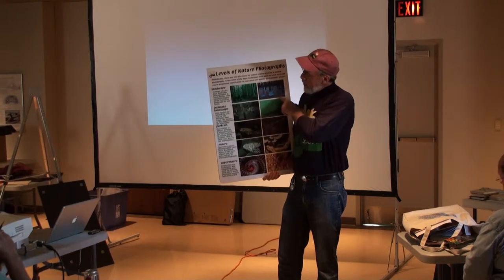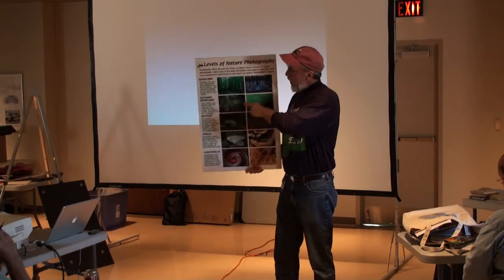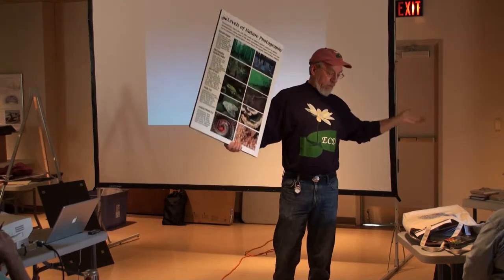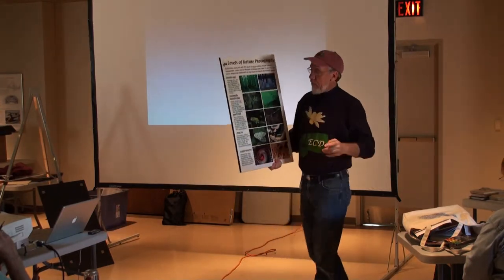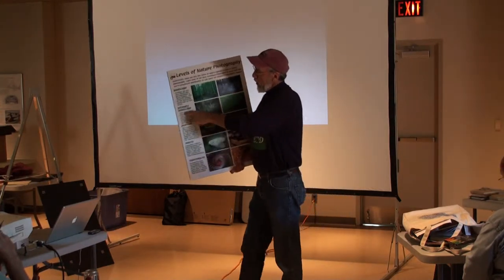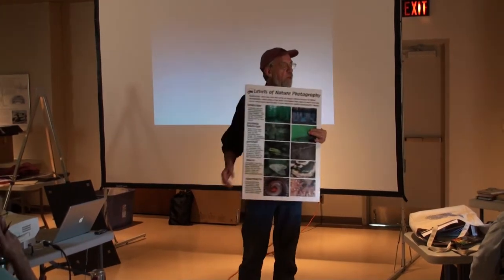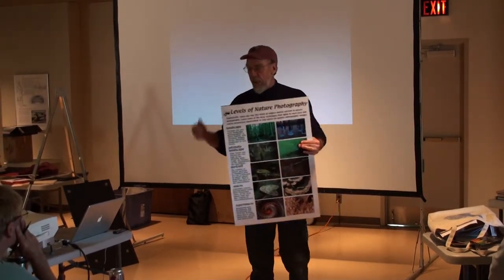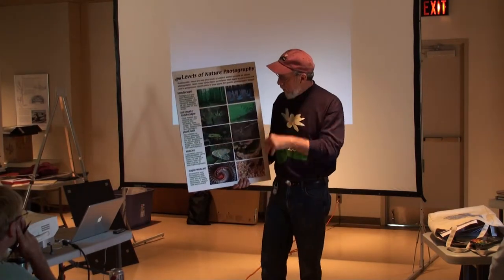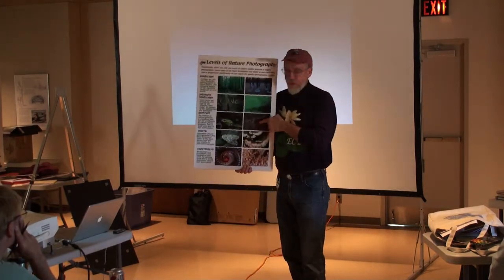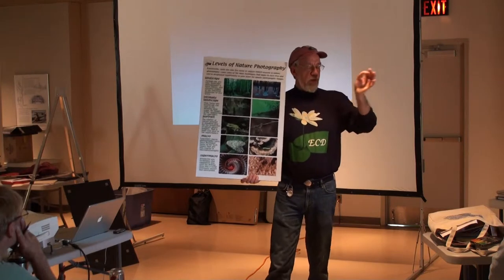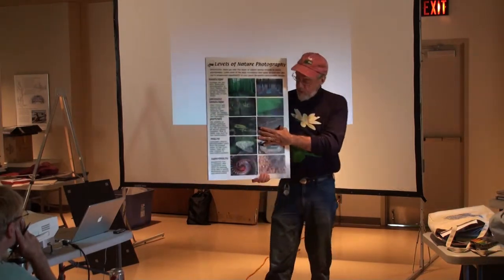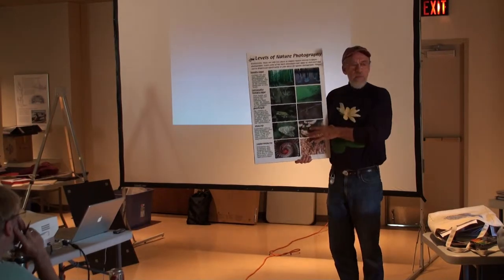The first level is landscape. The second level is intimate landscape. Landscape is simply taking scenery pictures. Intimate landscapes are taking small parts of the big landscape that reflect the whole — we talked about that last week with Elliot Porter and I brought in his book. Then we have portrait — that's the way you use it for your grandkids — you will take a portrait of just an organism in question.